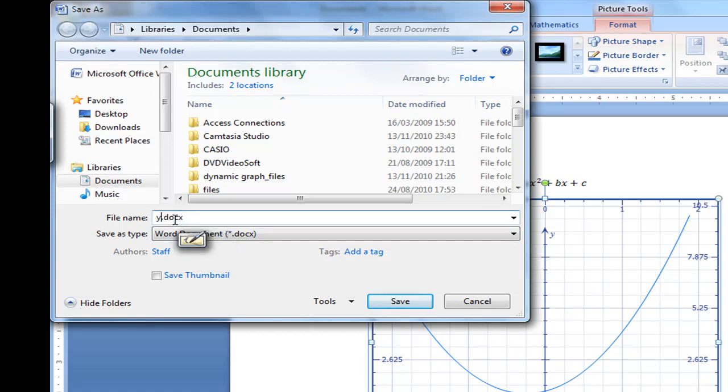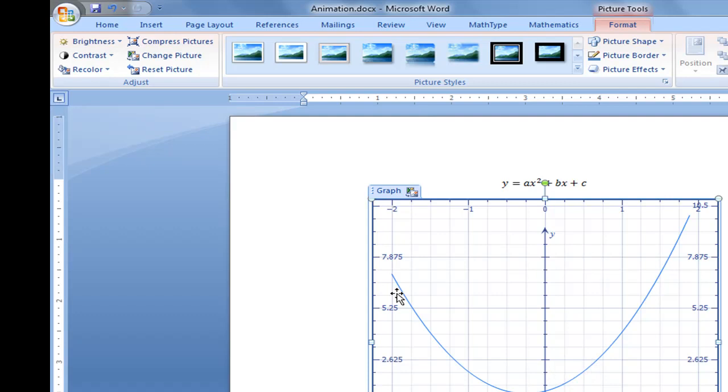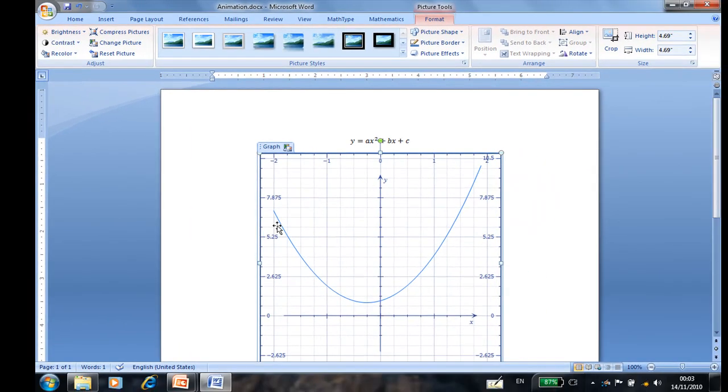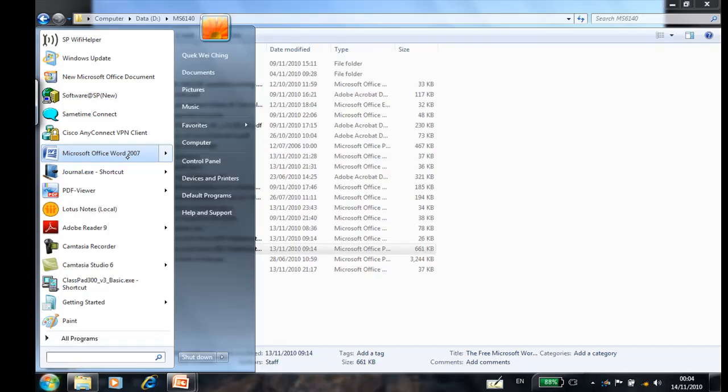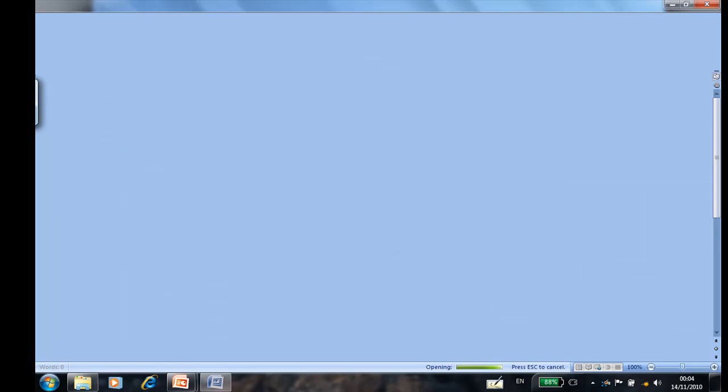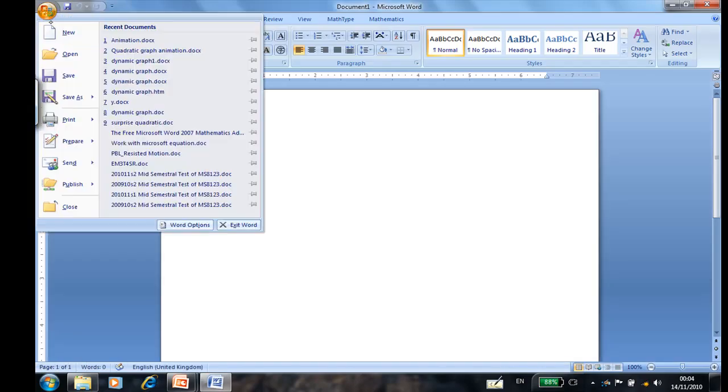Once you save it, next time when you need the file to do animation, you can reopen it. Let me close this Word 2007 document, and then I'm going to open the file again.